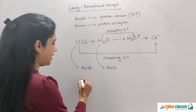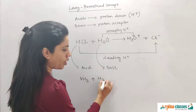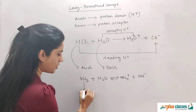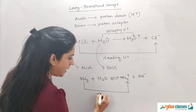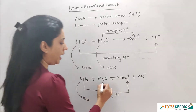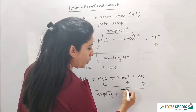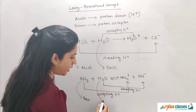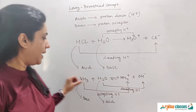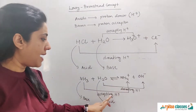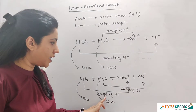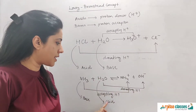Another example: NH3 dissolved in water gives NH4⁺ and OH⁻. NH3 converts into NH4⁺ by accepting H⁺ — since it accepts H⁺, it is a base. H2O converts into OH⁻ by donating H⁺ — since it donates H⁺, it is categorized as an acid. So in the first example water acted as a base, and here it is acting as an acid.